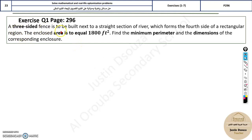Now let's see the problem. A three-sided fence is built next to a straight section of a river which forms the fourth side of a rectangular region. The enclosed area is equal to 1800 feet square. Find the minimum perimeter and the dimension of the corresponding enclosure. So now they are telling a river is passing by, now imagine this is the river and a fence is done. A fence, enclosed area. You must understand the fence won't be all the three regions. Why? Because one side is the water so you don't cover that. Only three-sided region.